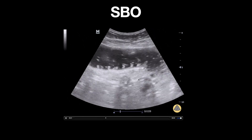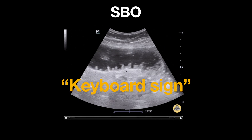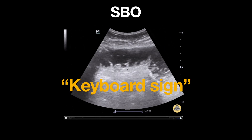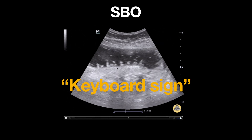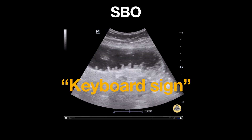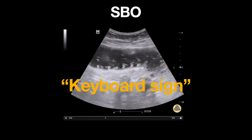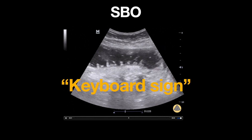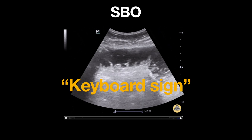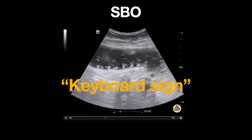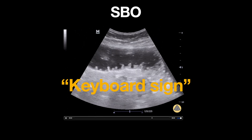Lastly, we can see the keyboard sign. Notice these finger-like projections along the wall of the small bowel — these represent plica circularis. Normally these are not seen; however, when the bowel becomes fluid-filled due to obstruction, they become more visible.